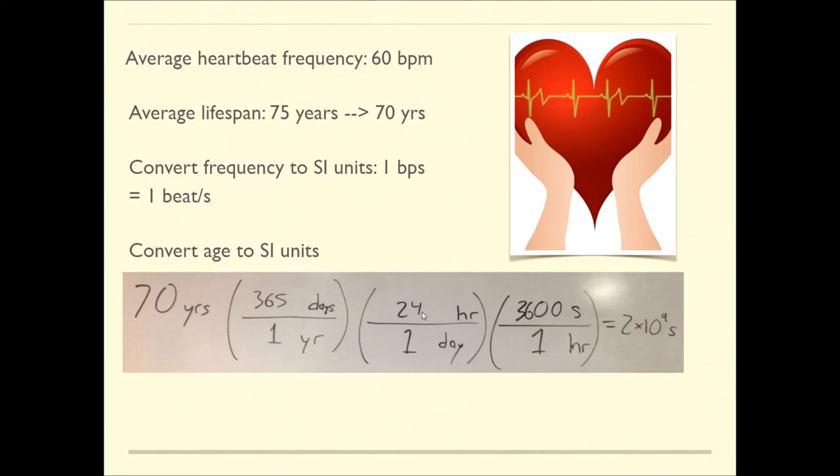I start with converting the years to days, then I convert the days to hours, and then I convert the hours to seconds. We're going to be multiplying a lot, and I got 2 times 10 to the 9. Again, I probably could get a little bit more accurate measurement than that, but not with 70 - one sig fig is my initial measurement - 2 times 10 to the 9 seconds.